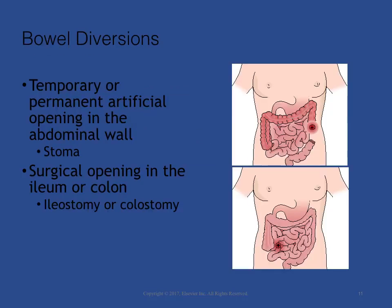Bowel Diversions: Certain diseases or surgical alterations make the normal passage of intestinal contents throughout the small and large intestine difficult or inadvisable. When these conditions are present, a temporary or permanent opening called a stoma is surgically created by bringing a portion of the intestine out through the abdominal wall. These openings are called an ileostomy or colostomy, depending on which part of the intestinal tract is used to create the stoma.